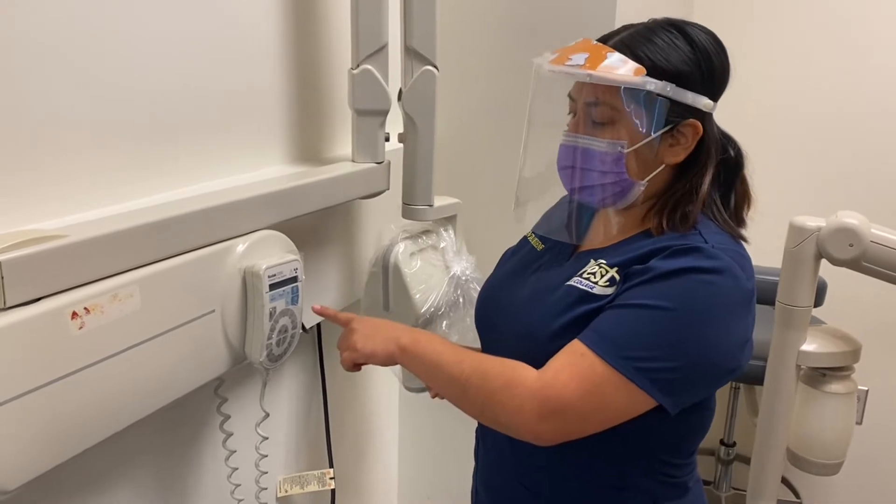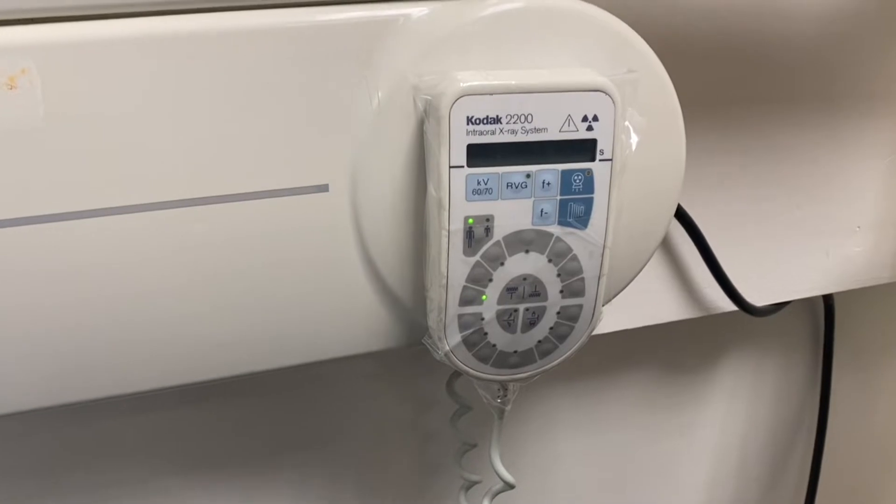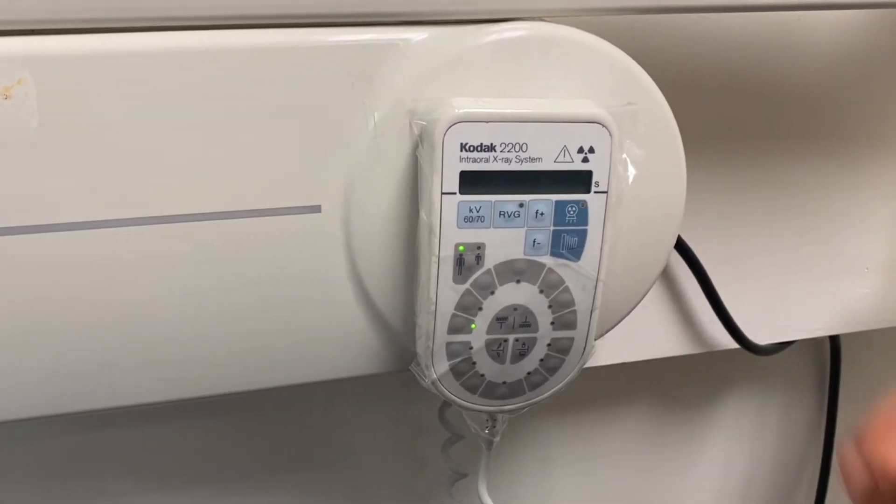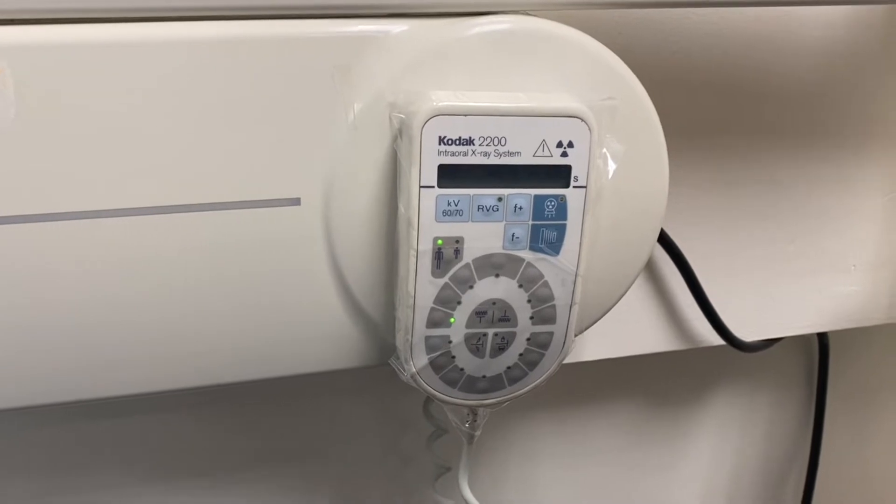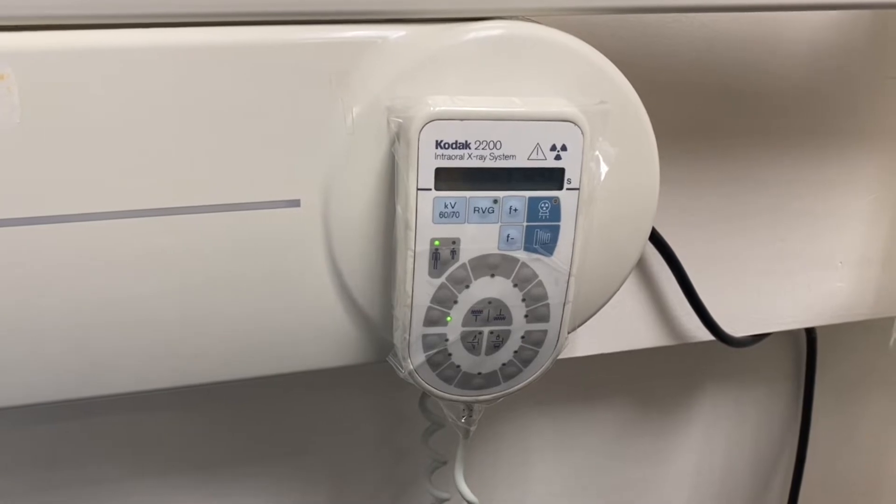From there, our setting needs to be set to a traditional setting, not the digital. In order to determine that, we have to look at the RVG light. The light will be on if it's on digital or it will be off if it's on traditional, just like how we want it here in traditional.